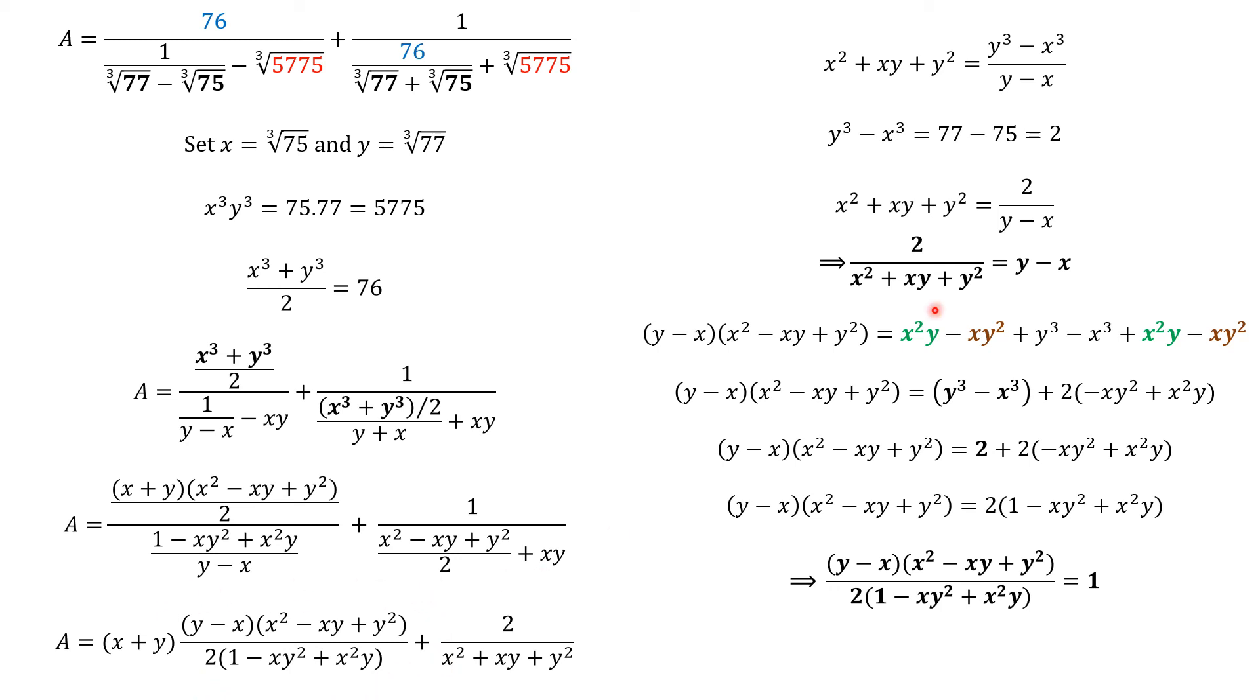Using those two results, we can see that A will equal X plus Y because this term equals 1. And we see that this one equals Y minus X. So, A equals X plus Y plus Y minus X. X and minus X will cancel out each other. So, A equals 2 times Y.